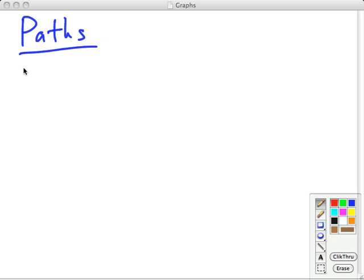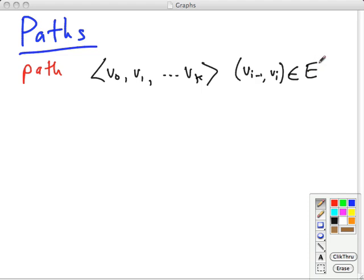Now let's look at paths. A path of length k is a sequence of vertices such that each V i minus 1 V i is in the set of edges. This would be a set rather than a tuple if we're in an undirected graph. And we say the path contains the edges and the vertices involved here. A simple path is a path in which all the vertices are distinct. If a path exists from one vertex to another, like from V0 to Vk, we say that Vk is reachable from V0.